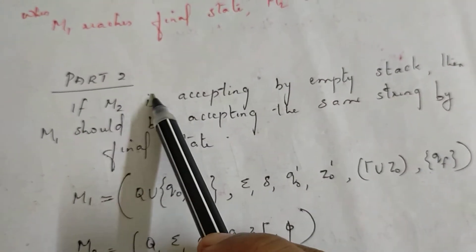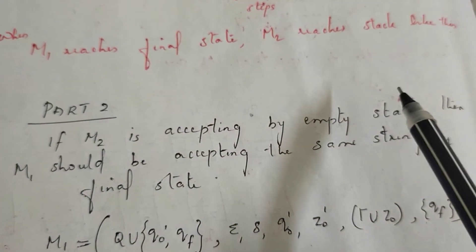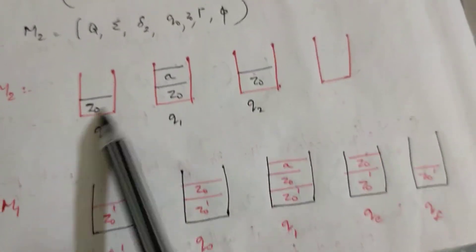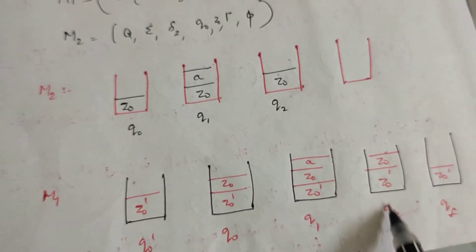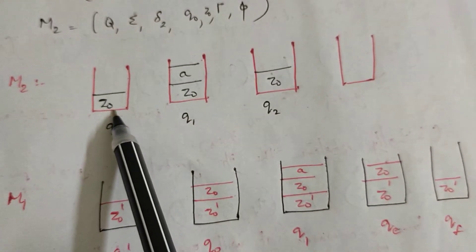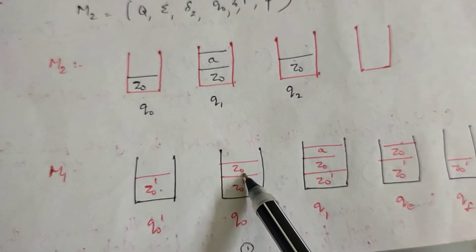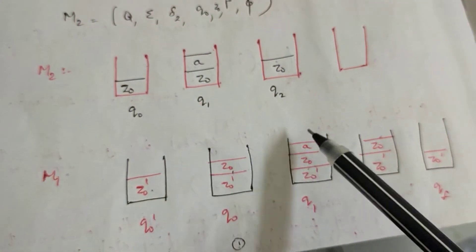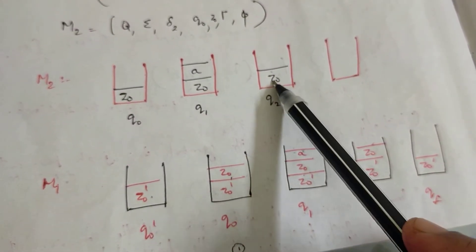Now we have to prove part two. In part two, M2 accepted by empty stack implies accepted by M1 by final state. We will change M1. We follow the same procedure, pushing z0 and using the same transitions. Input is completely consumed and z0 remains at the bottom of the stack.